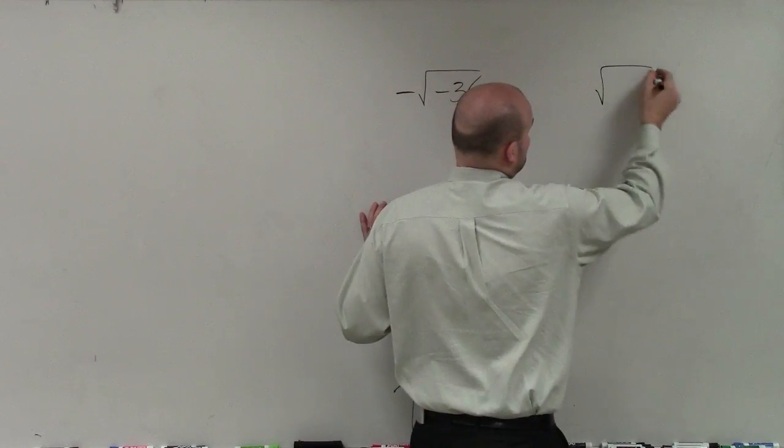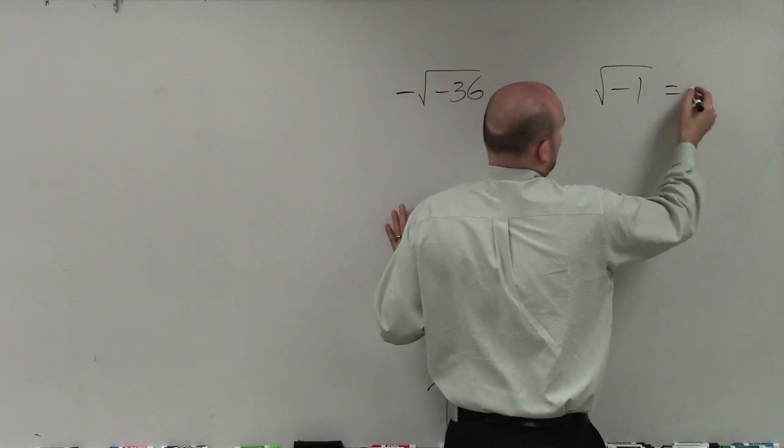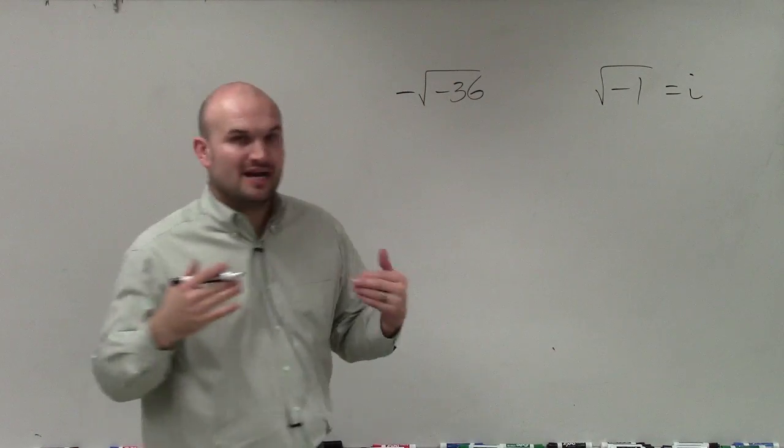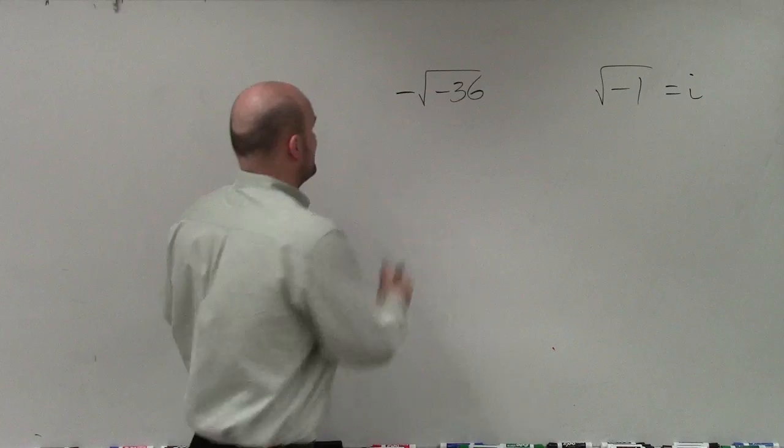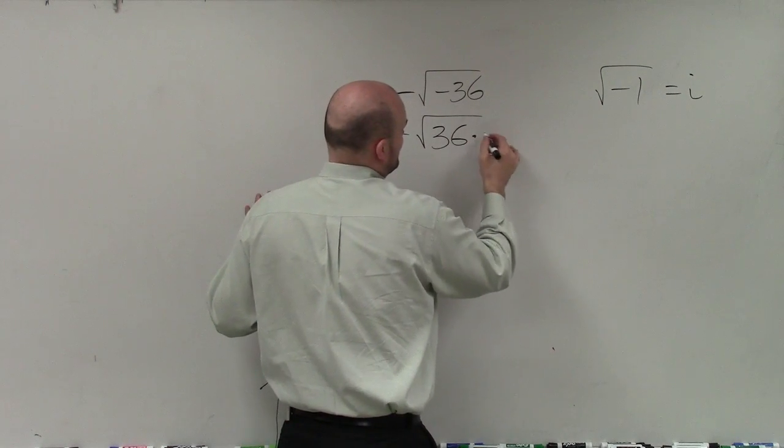However, if I think about the basics of a square root of negative 1, we represent that as i. So the first thing I want to do is forget about taking the square root of a negative. What I'm going to do is rewrite this as 36 times negative 1.